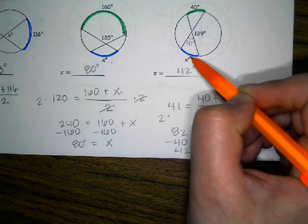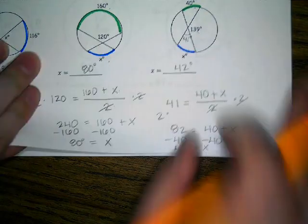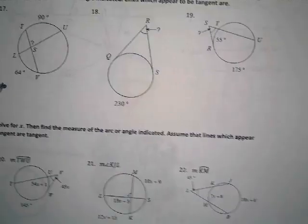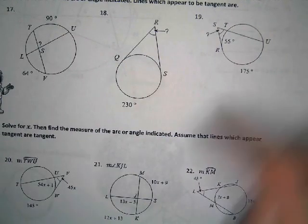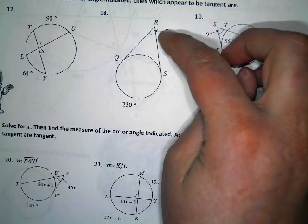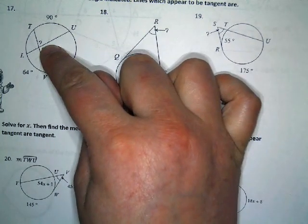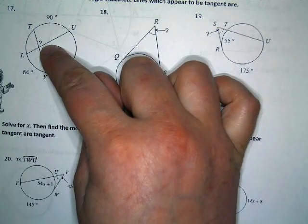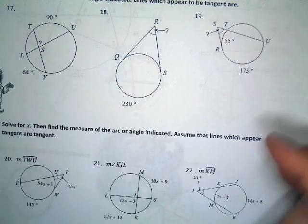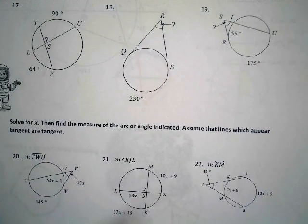We have two options: the angle on the outside of the circle where we use big arc minus little arc divided by two, and the angle on the inside of the circle where we use arc one plus arc two divided by two. Two different types of problems. Go ahead and start on 17, 18, 19 - those are straight up numbers and pretty easy. Then we'll do one of the next three together since those have lots of variables.